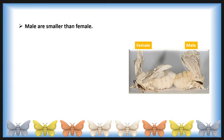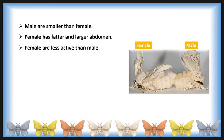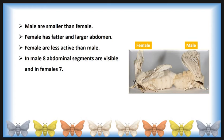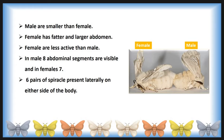Male silk moths are smaller than female silk moths — this is known as sexual dimorphism. The female silk moth has a fatter and larger abdomen than the male silk moth, and female silk moths are less active than males. In the male, eight abdominal segments are visible, whereas in the female, only seven abdominal segments are visible.